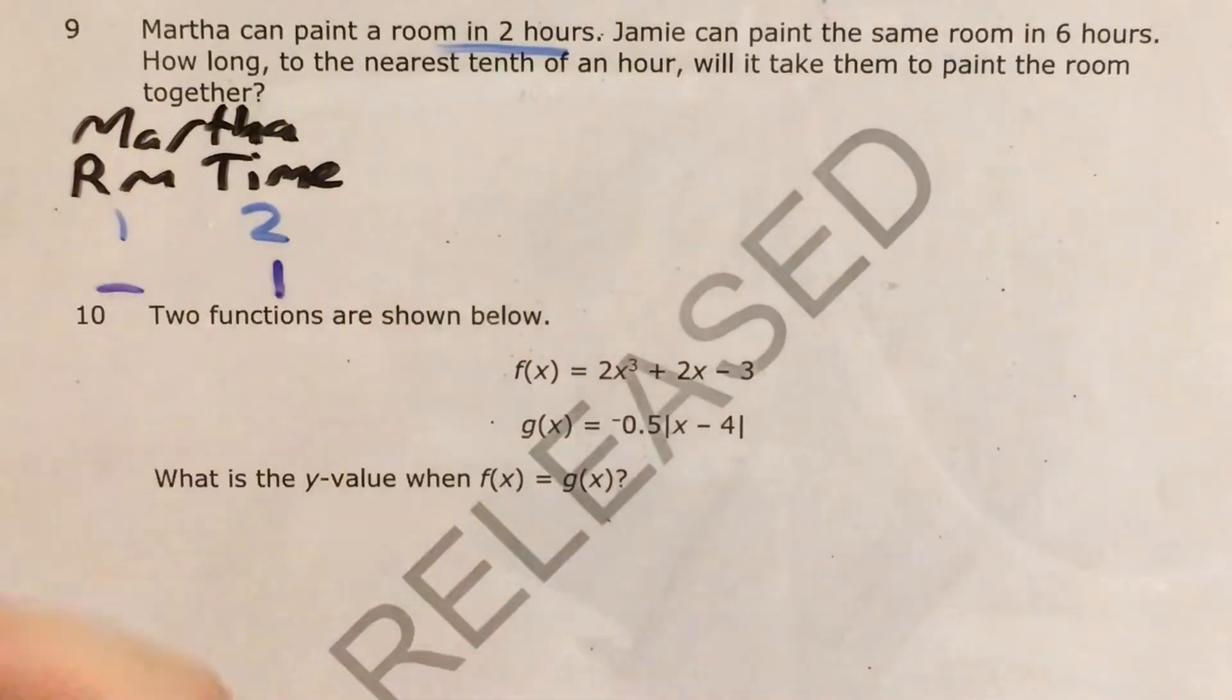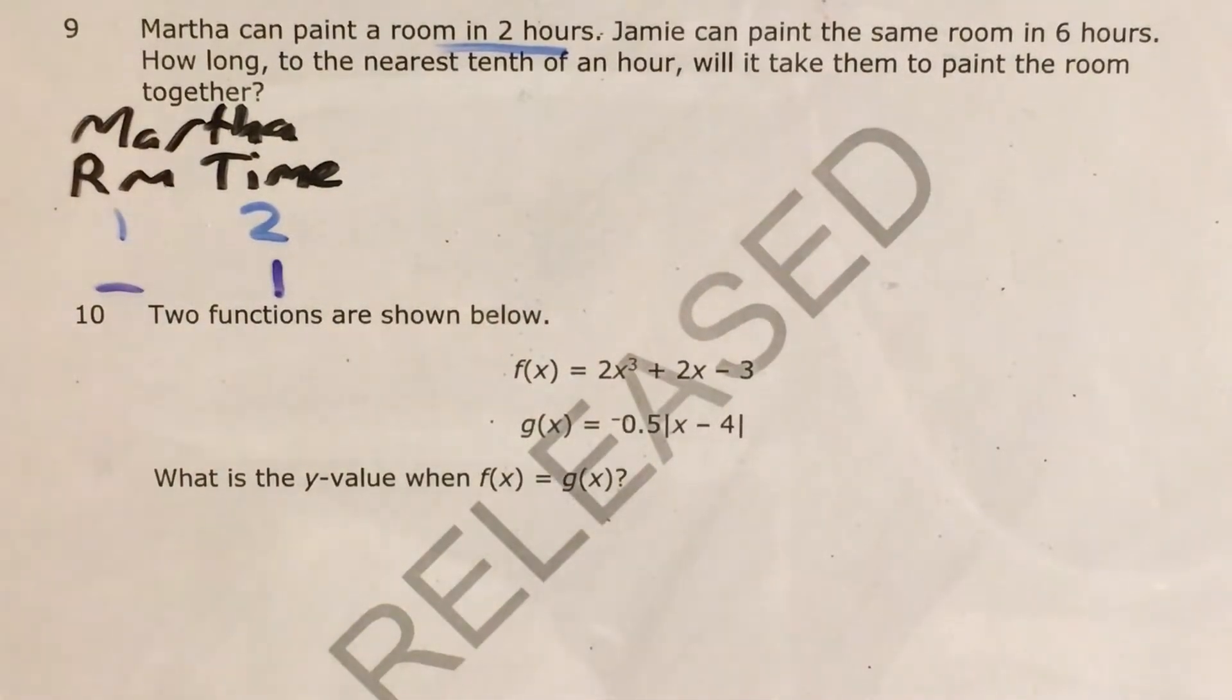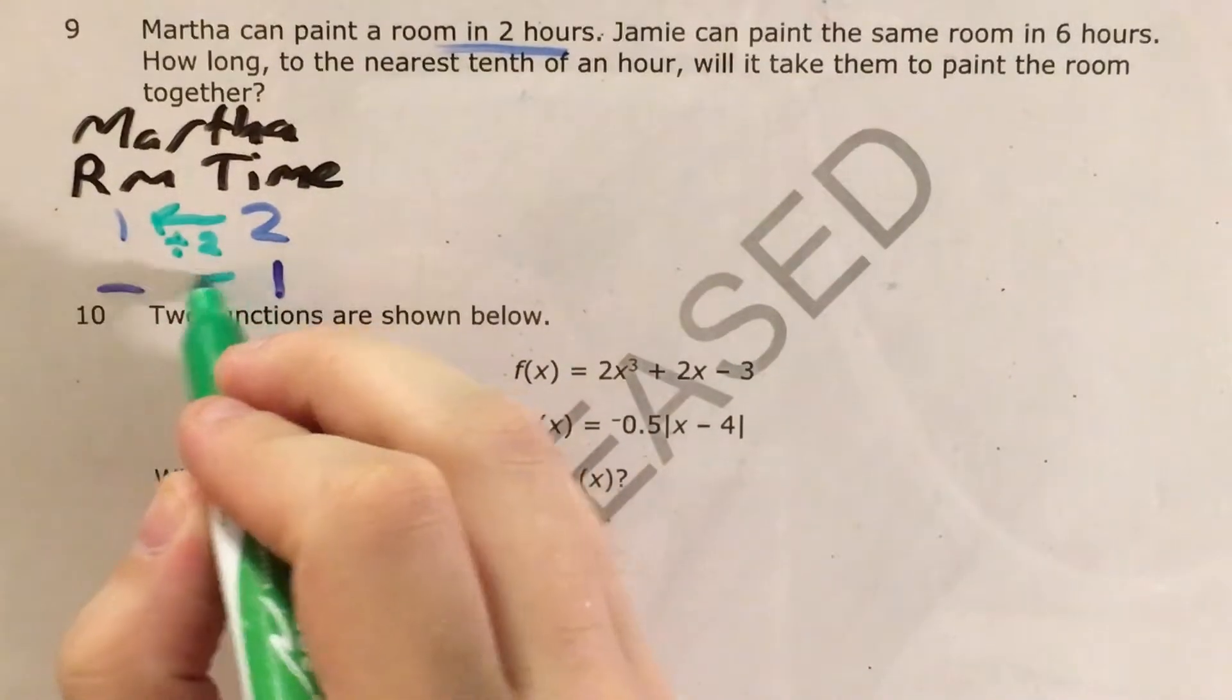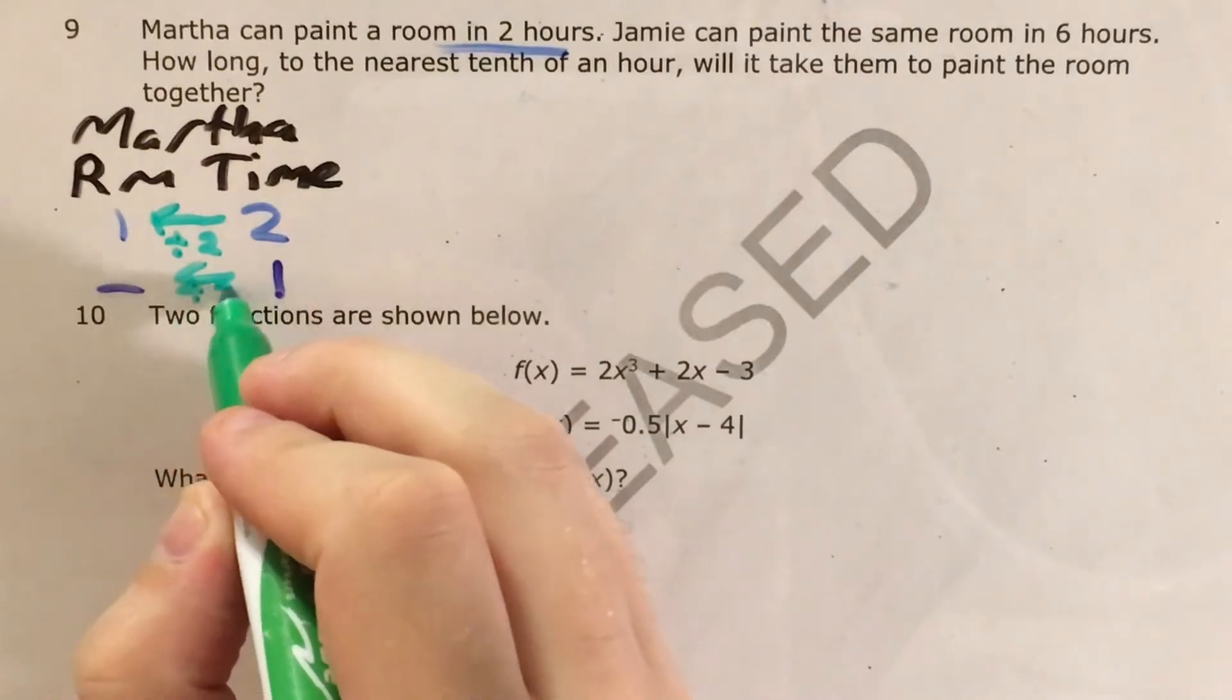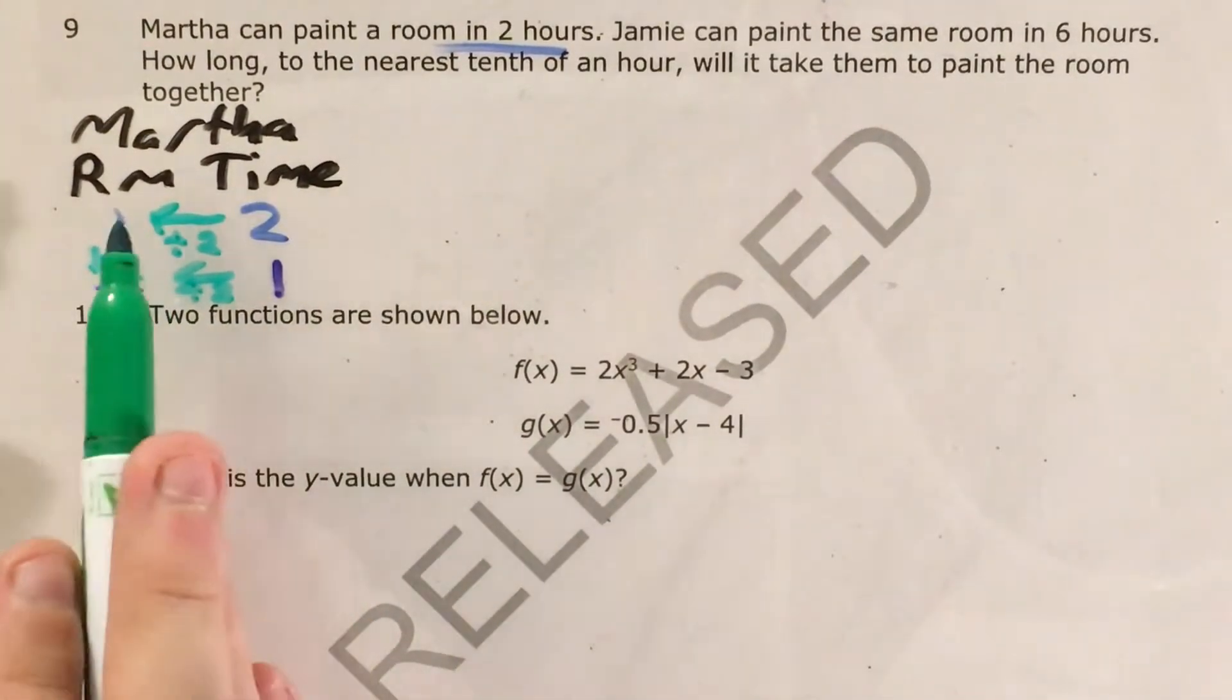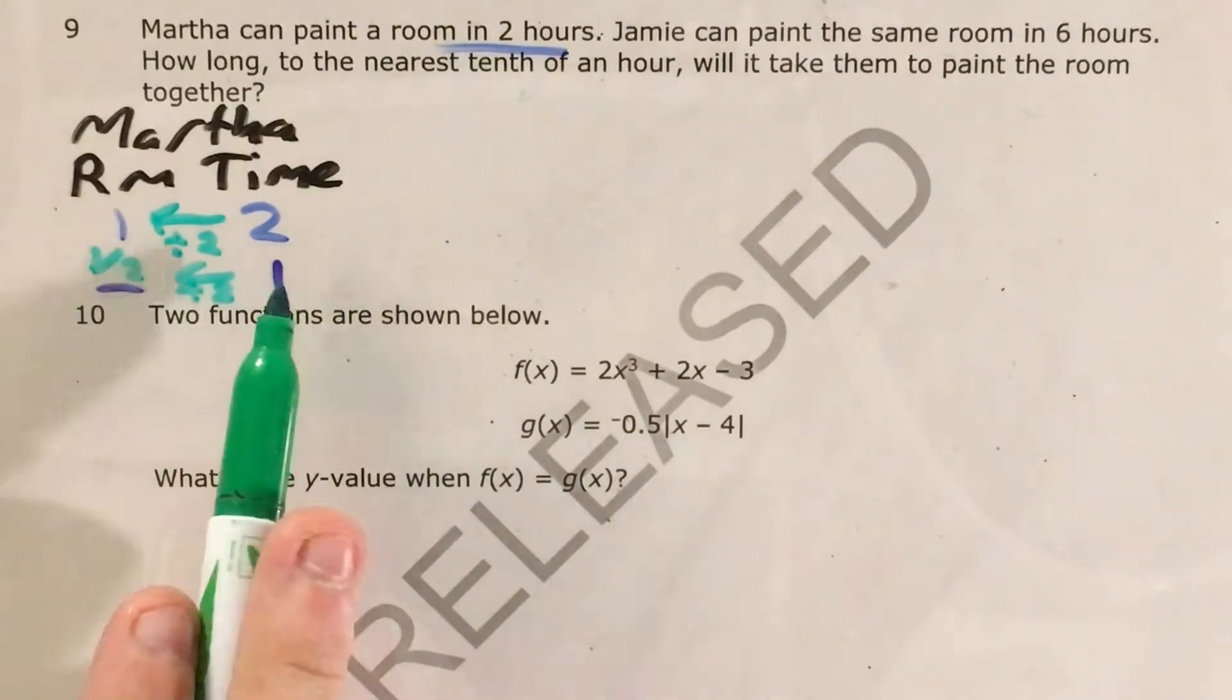Now I can use proportions or I can look for a multiplying or dividing pattern here. Either way I'll divide by two to get that if Martha can paint one room in two hours she paints half the room in one hour.